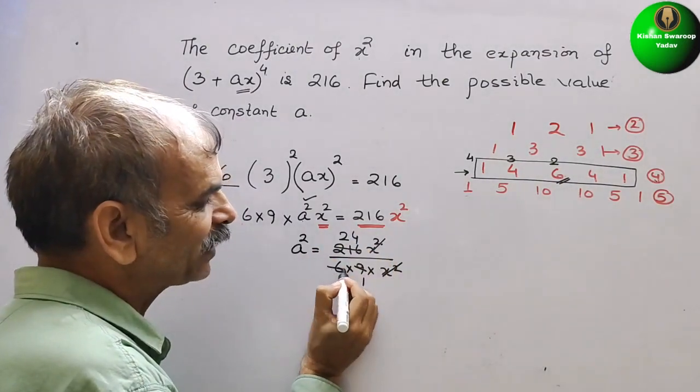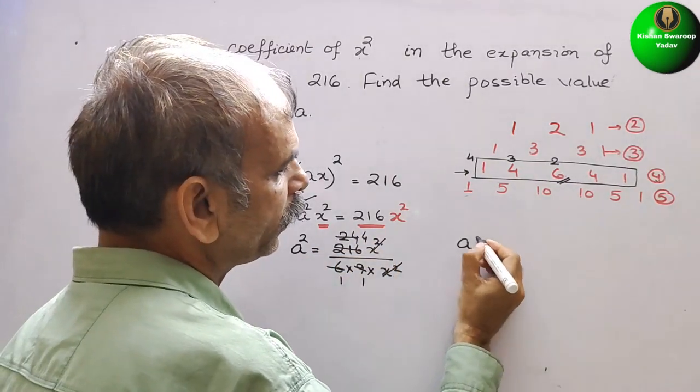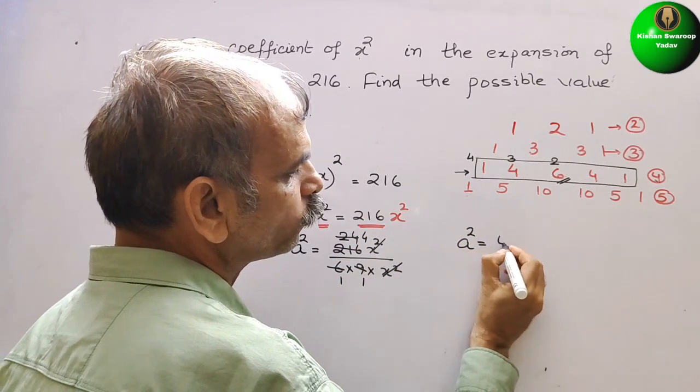So now divided by 6. It will be 1. Here comes 4. So we got a² is equal to 4.